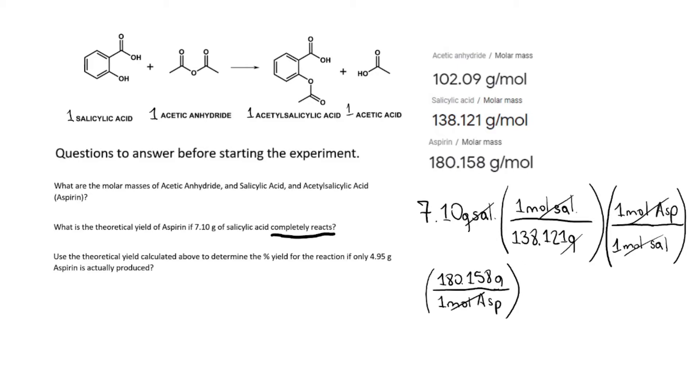At this point, we cancel our units - grams of salicylic acid, moles of salicylic acid, and moles of aspirin - and we're left in grams of aspirin. We multiply across the numerator and denominator and then divide. That equals 7.10 times 180.158 divided by 138.121, which equals 9.26 grams of aspirin.